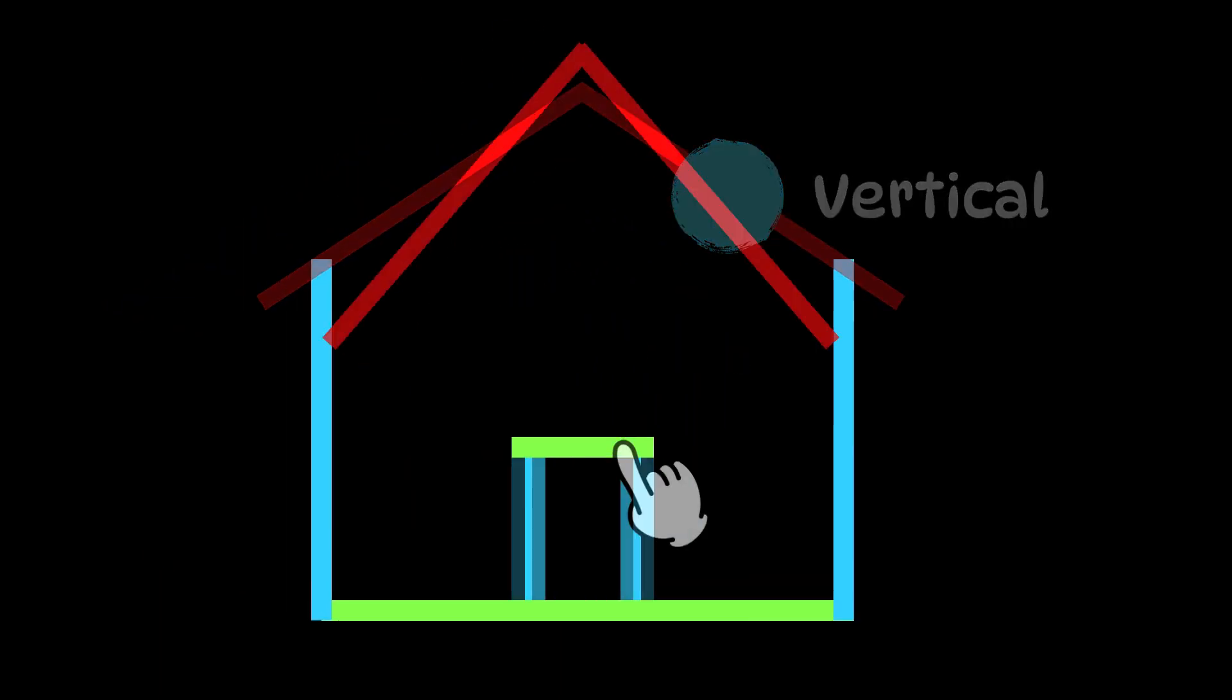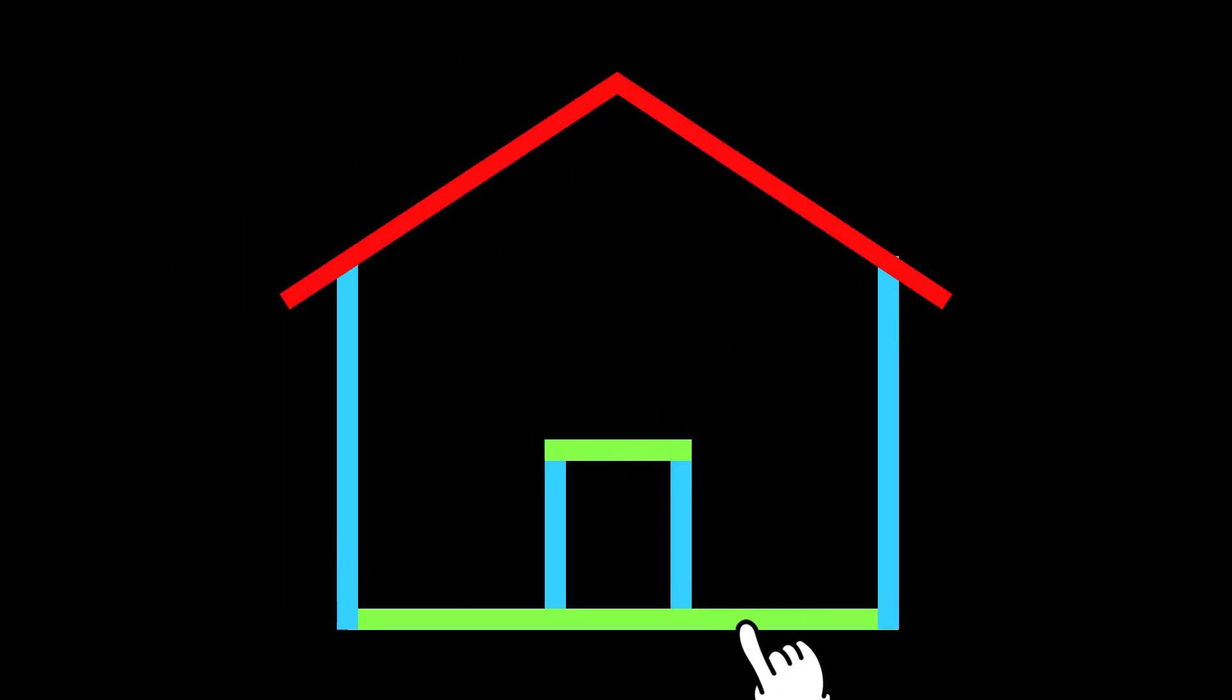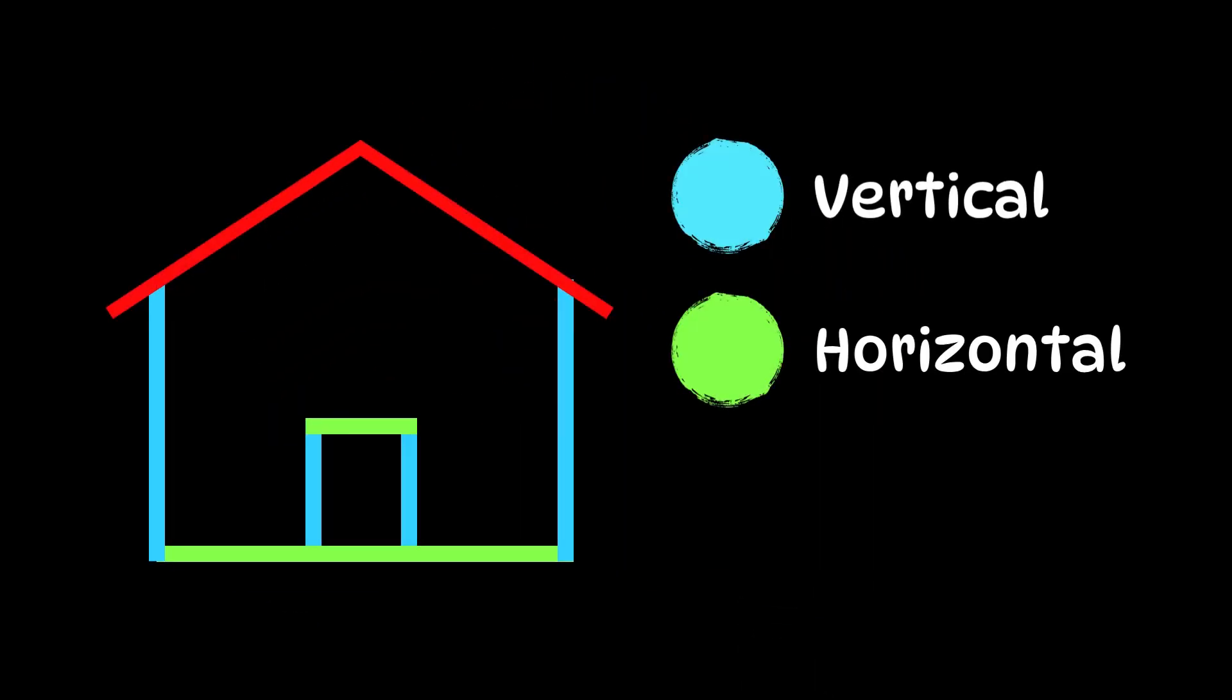Now look at the green lines that go side by side. These are horizontal lines or sleeping lines.